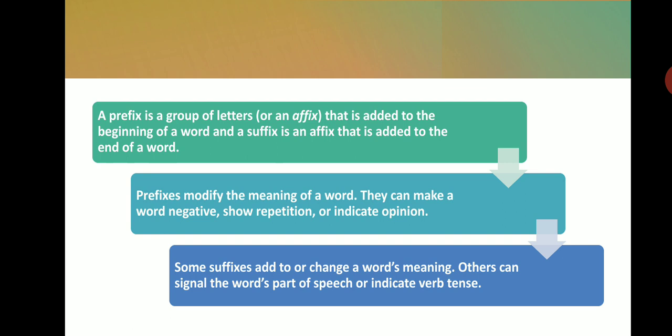Prefixes and suffixes are both called affixes. A prefix is a group of letters, or an affix, that is added at the beginning of the word. When these two or three letters come at the beginning of the word, it is called a prefix. A suffix is an affix that is added at the end of the word. When these two or three letters come at the end of the word, it is the suffix. For example, in 'unhappy,' un- is the prefix. In the word 'happily,' -ily is the suffix.